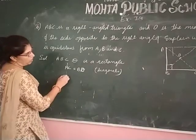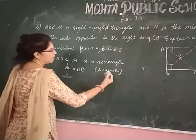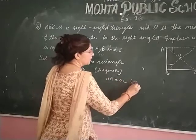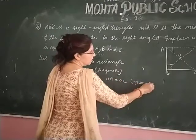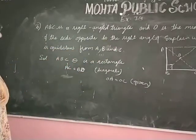And OA is equal to OC. Write down here, OA is equal to OC. Given, because O is midpoint of side AC. Clear?